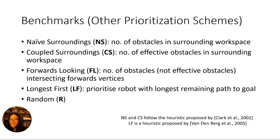These are the other prioritization schemes we implemented as benchmarks. The first two look at the number of obstacles or effective obstacles within a certain range of the robot. Forwards looking is similar to path prospects, but counts the normal obstacles that intersect the forwards vertices rather than effective obstacles.